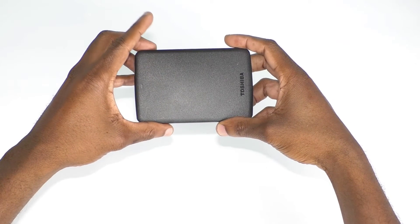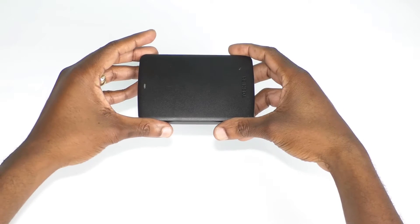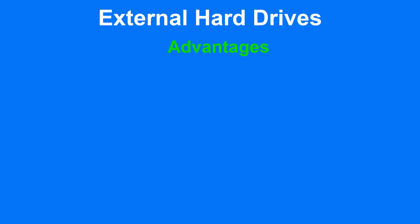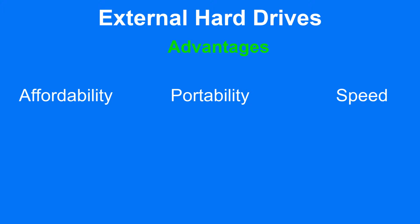The next option we are going to look at is external hard drives. External hard drives are relatively inexpensive — you can get a 1TB drive for less than $50. Just like flash drives and SD cards, external drives are also portable. Newer external hard drives use USB 3.0 or USB-C, which makes data transfer to and from your computer very fast.